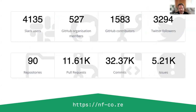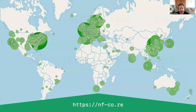Here are some numbers about the NFCore community: there are a little over 4,000 Slack users, more than 500 GitHub organization members, over 1,500 GitHub contributors, and more than 3,000 Twitter followers. These numbers evolve rapidly. The NFCore community is very global, with a strong user base in Europe and the Americas, and expanding into Latin America and Asia Pacific where dedicated developer advocates are available.